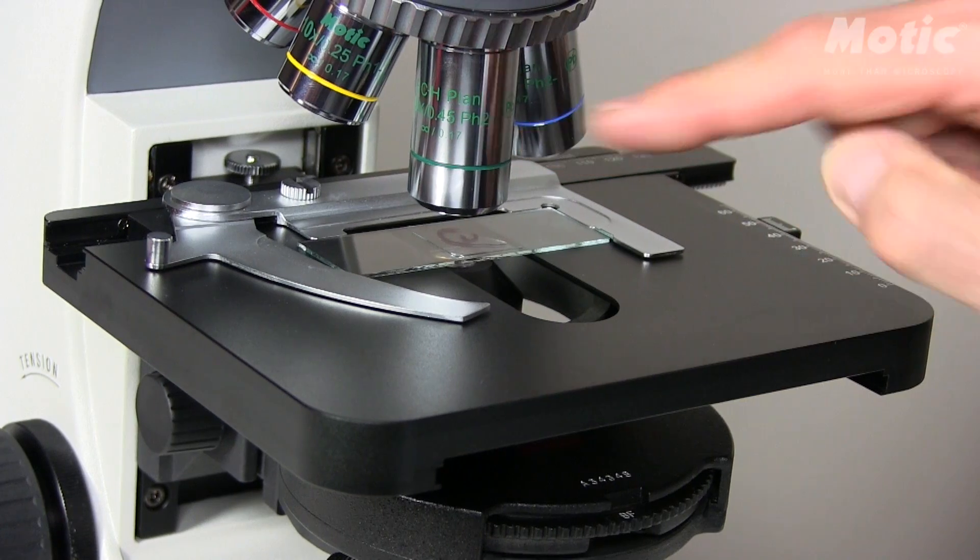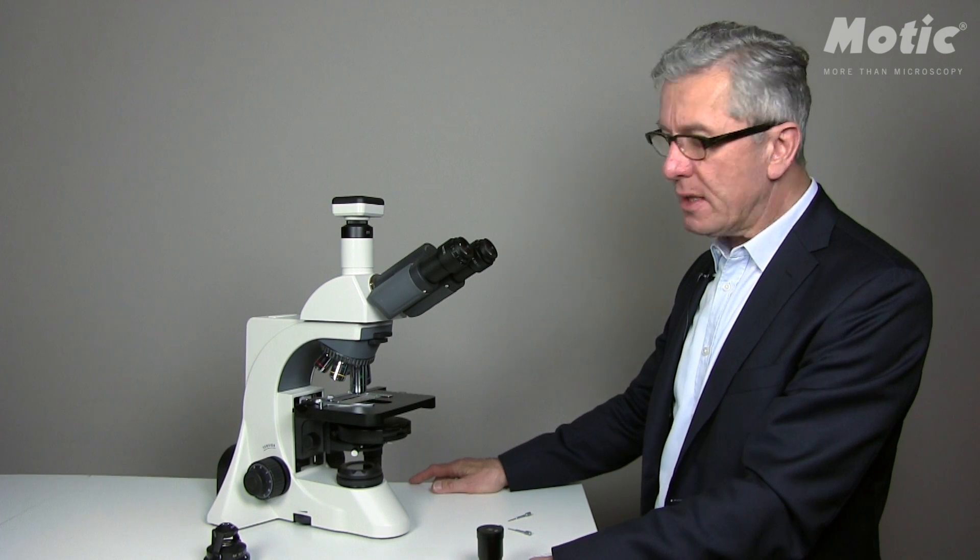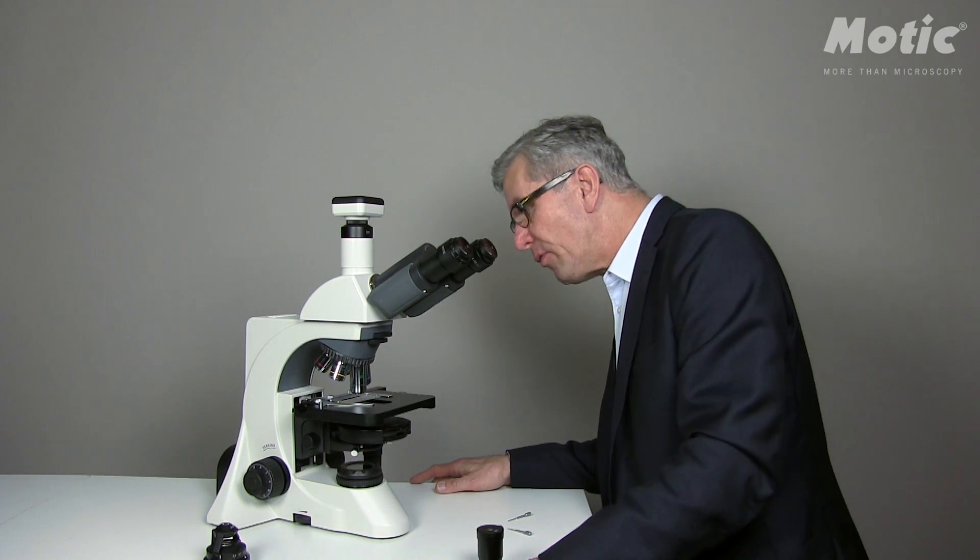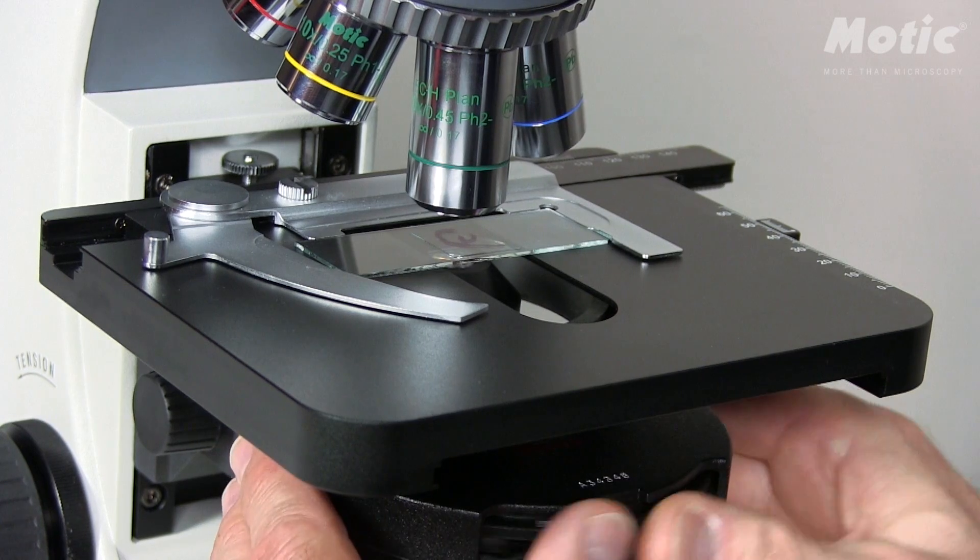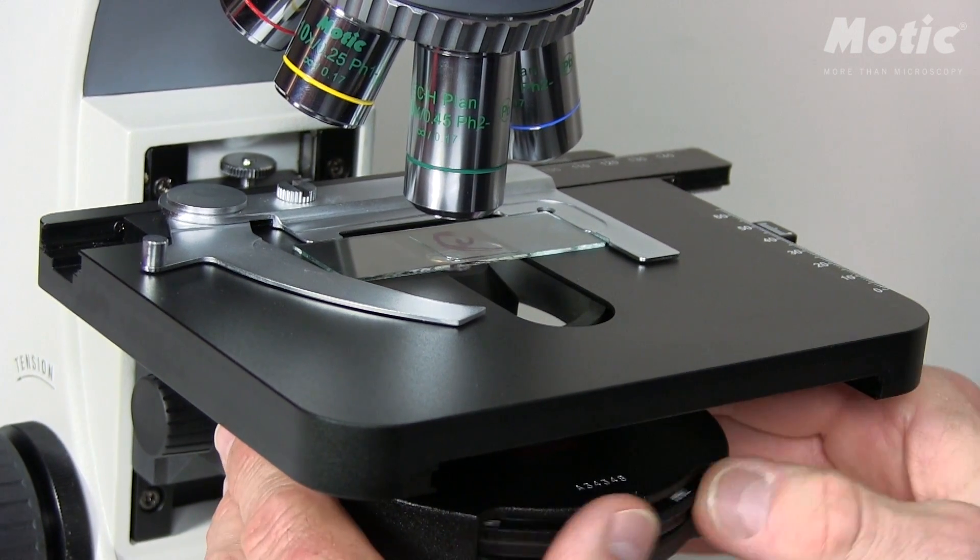In this case, a 20 times phase is in the ray path, 20 times phase with a phase ring size of pH 2. So we have to change the turret condenser to the position pH 2.